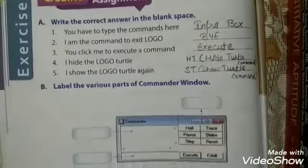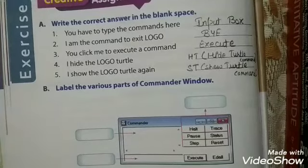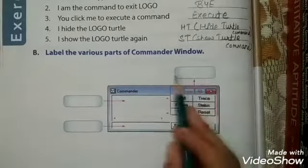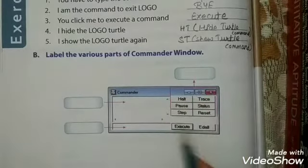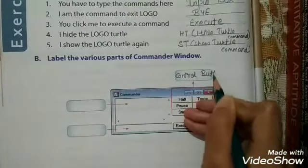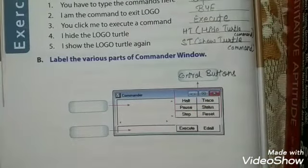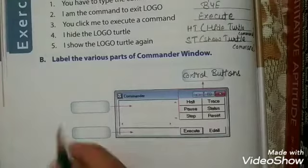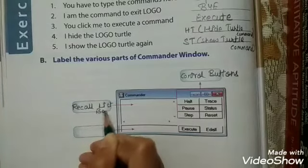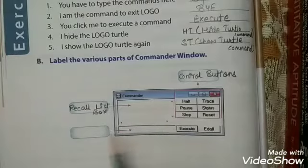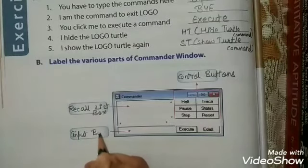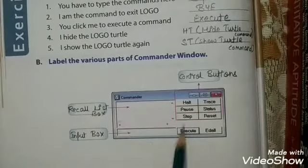Now the next exercise is to label the various parts of the Commander window. First, this is known as control buttons. This one is our recall list box — R-E-C-A-L-L list box. And this is our input box — in the input box we type our commands.